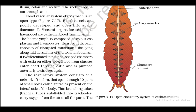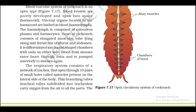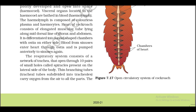Blood vessels are poorly developed and open into spaces called haemocoels. Visceral organs located in the haemocoel are bathed in blood called haemolymph. The haemolymph is composed of colorless plasma and haemocytes. The heart of the cockroach consists of an elongated muscular tubule lying along the mid-dorsal line of the thorax and abdomen. It is differentiated into funnel-shaped chambers with ostia on either side. Blood from sinuses enters the heart through the ostia and is pumped anteriorly to the sinuses again.